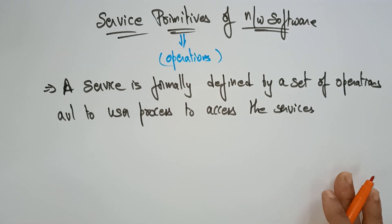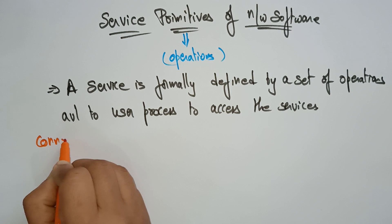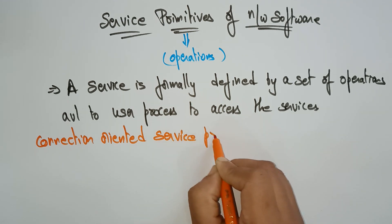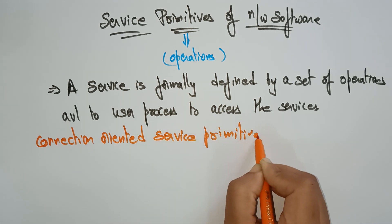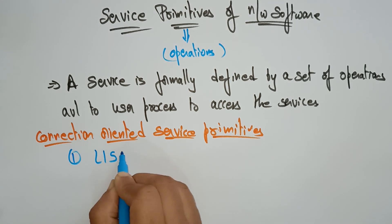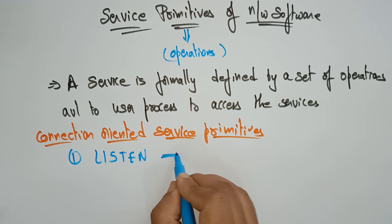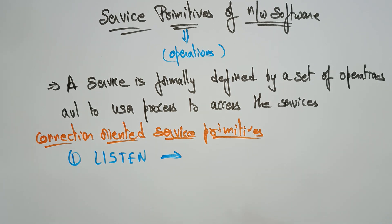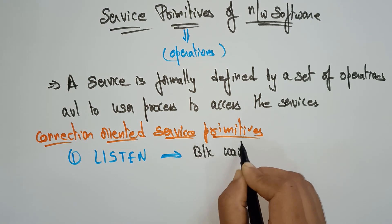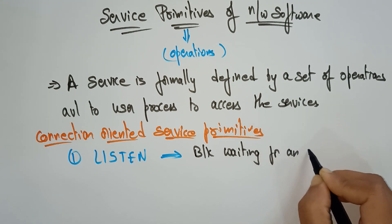Let me talk about the connection-oriented service primitives. What are the connection-oriented service operations in the network software? The first one is LISTEN. LISTEN is an operation which is a connection-oriented service. Whenever the LISTEN primitive — the LISTEN operation — is established in the connection-oriented, it means a block waiting for an incoming connection.